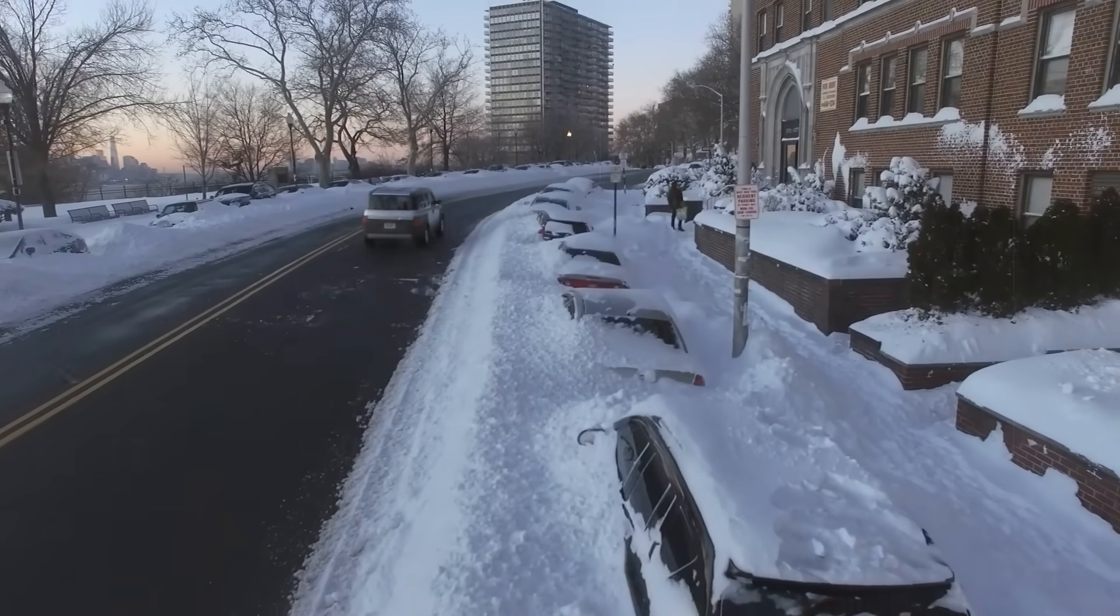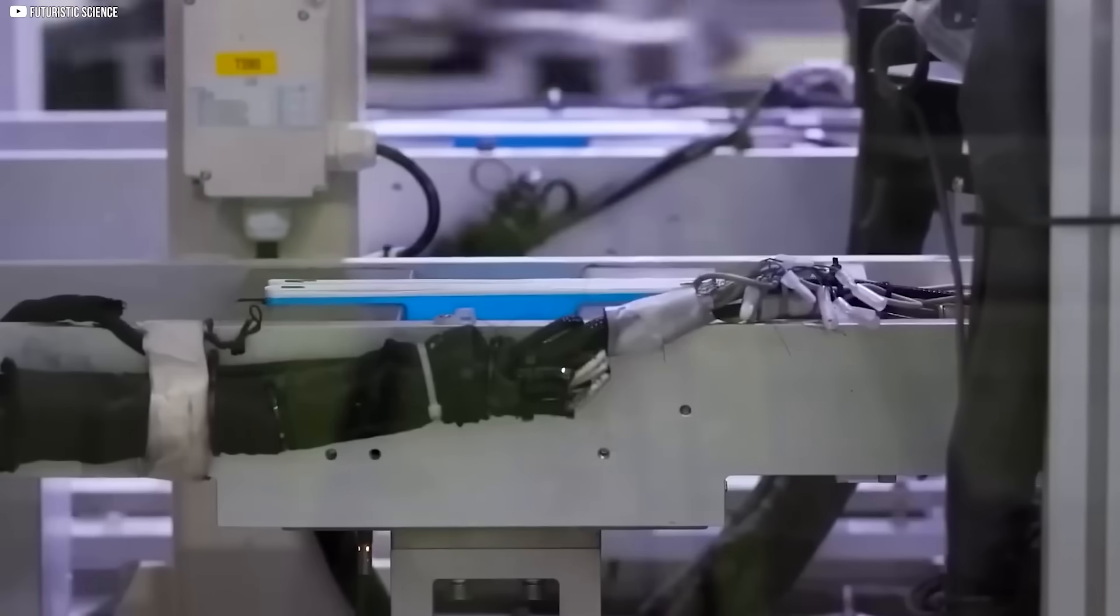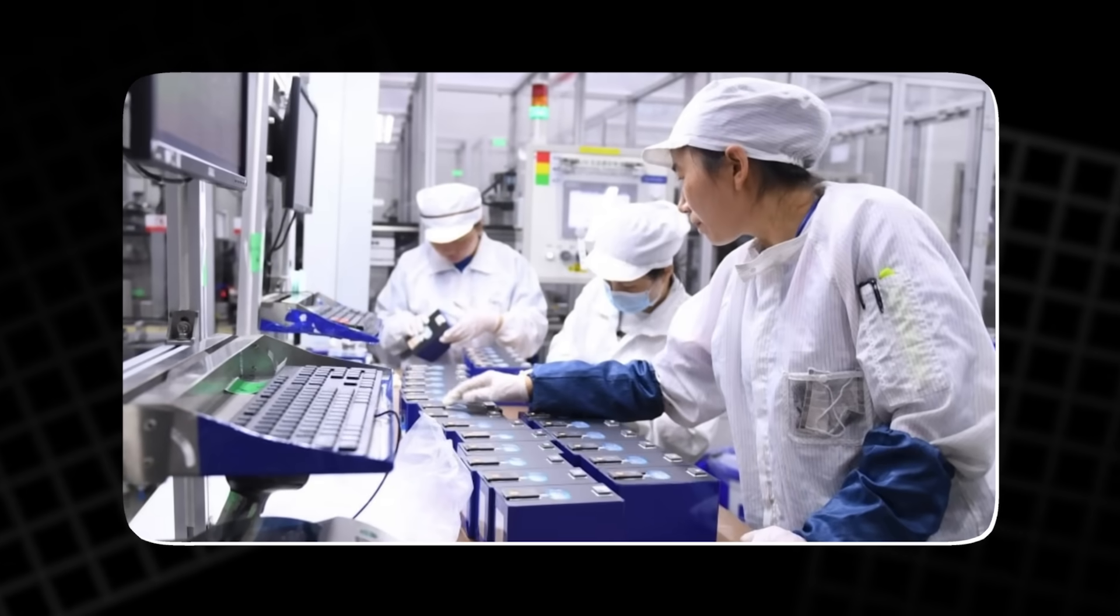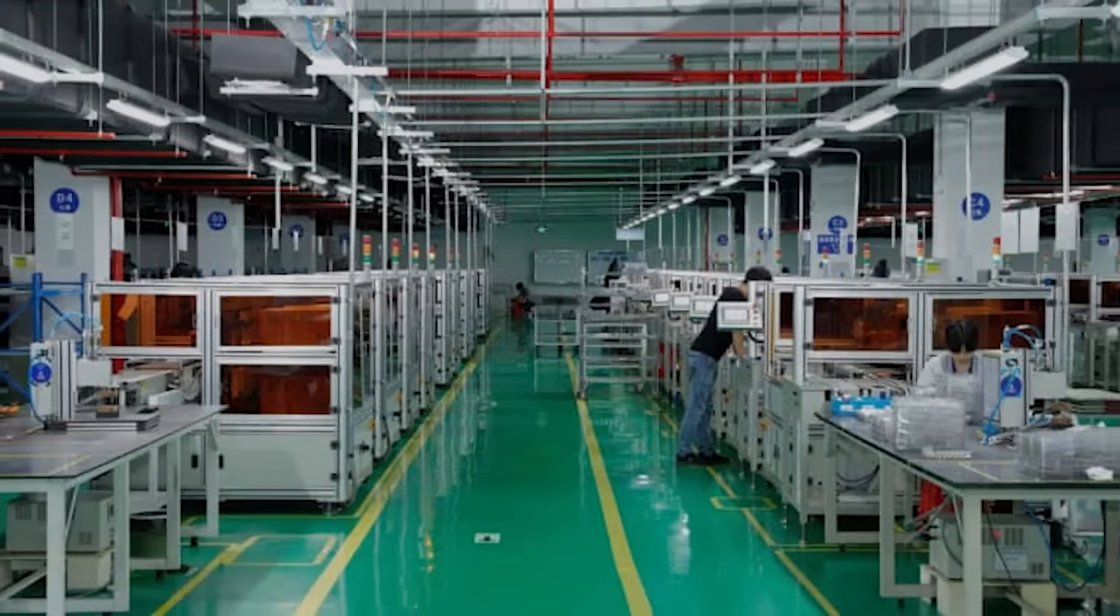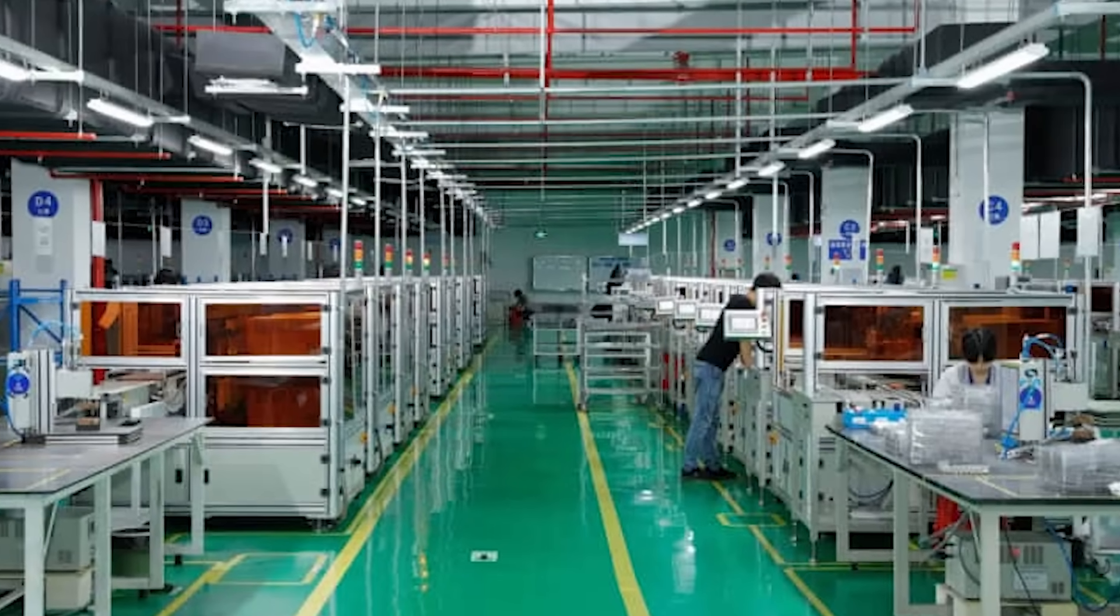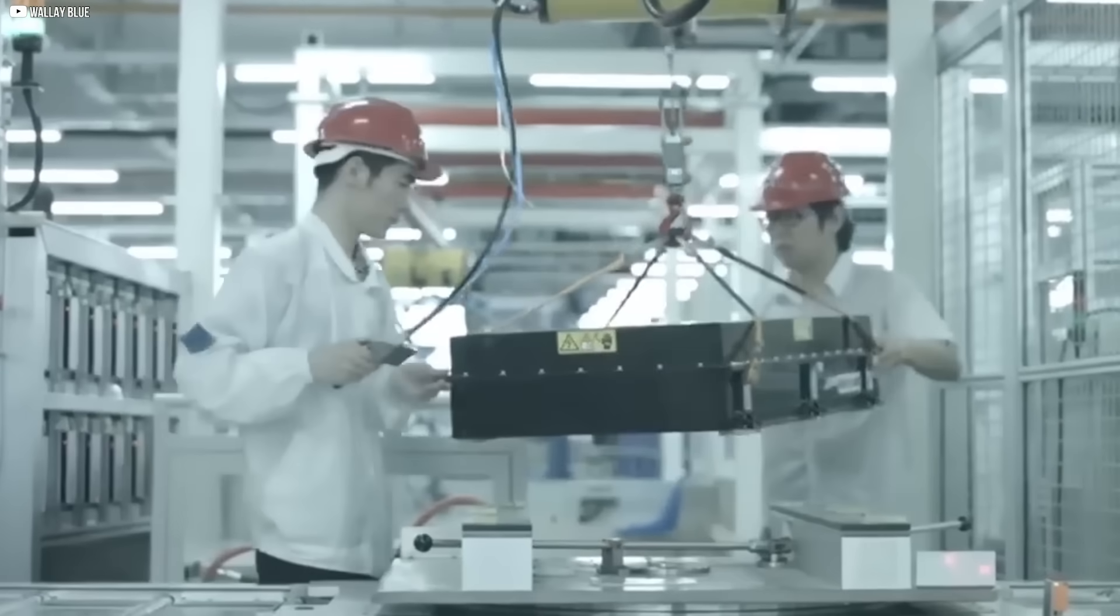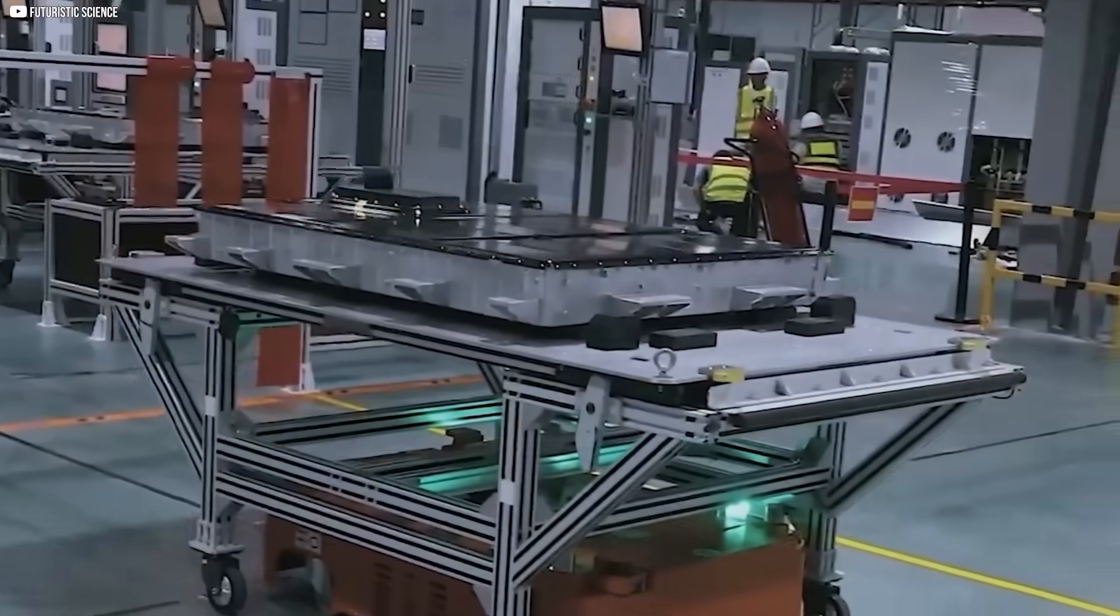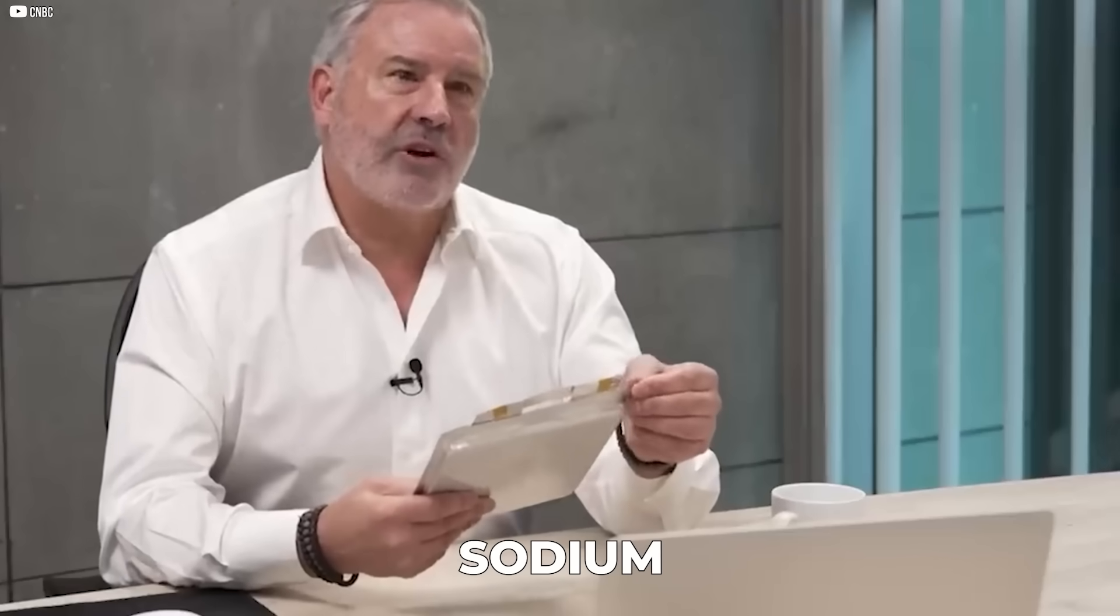On the production side, CATL tackled scalability head-on. They adapted their existing lithium-ion manufacturing lines to accommodate sodium-ion cell assembly. This wasn't some distant future project. Factories were being retooled. Supply chains were shifting. The message was clear. This wasn't a science fair project anymore. It was industrial-scale battery production with sodium at its core.